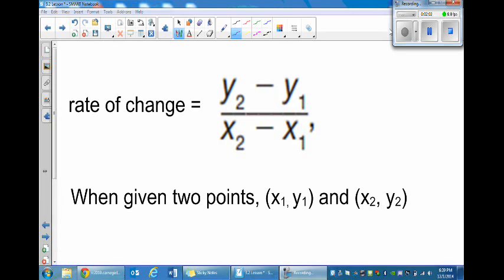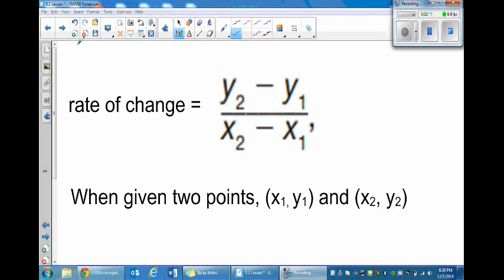So when given two points (x, y) and (x, y), we can use those two points to find the rate of change. Here's an example: let's say we use the point from the table (8, 12) and the second point (16, 18). Here we would have x1 and y1, and over here we would have x2 and y2.